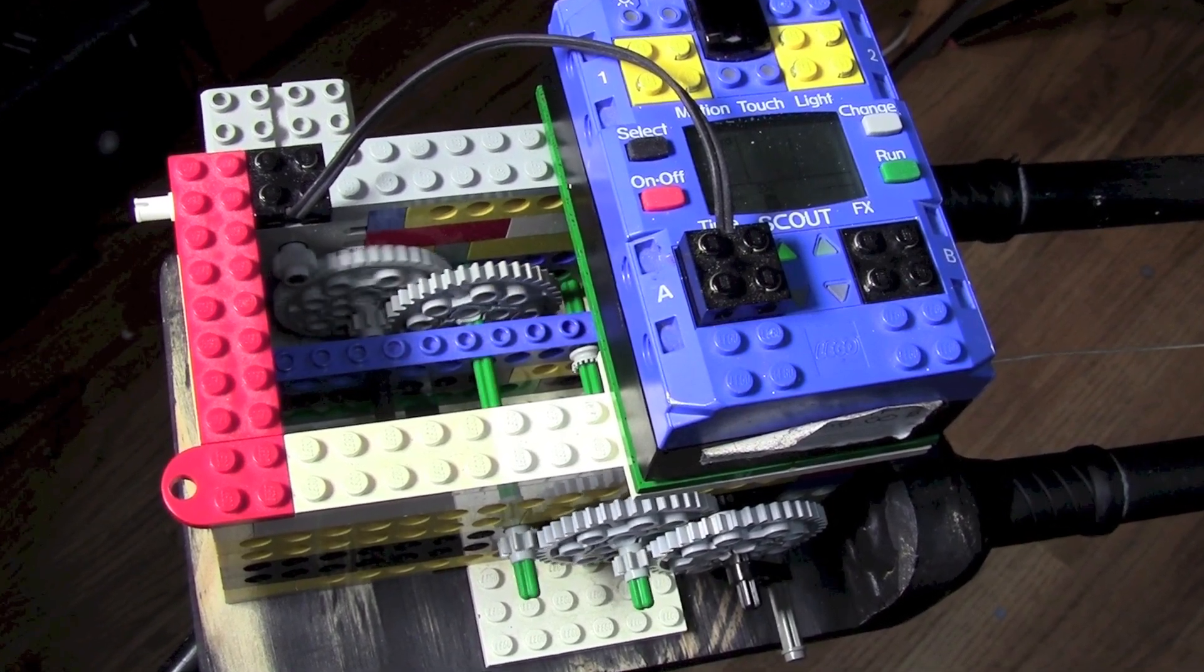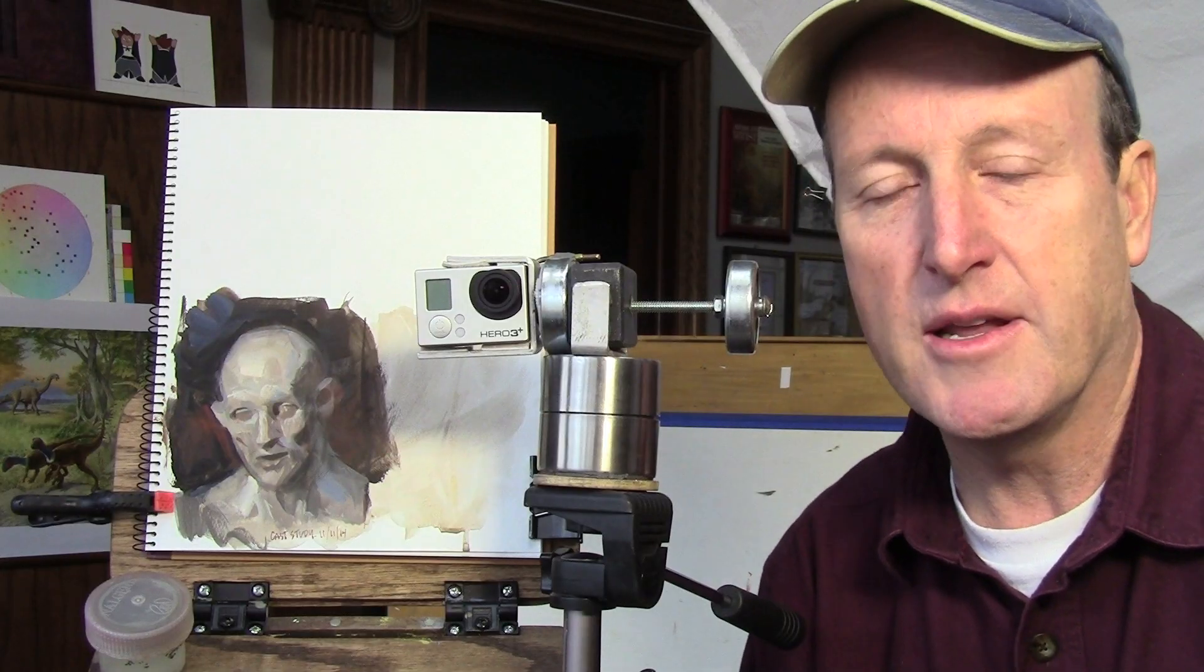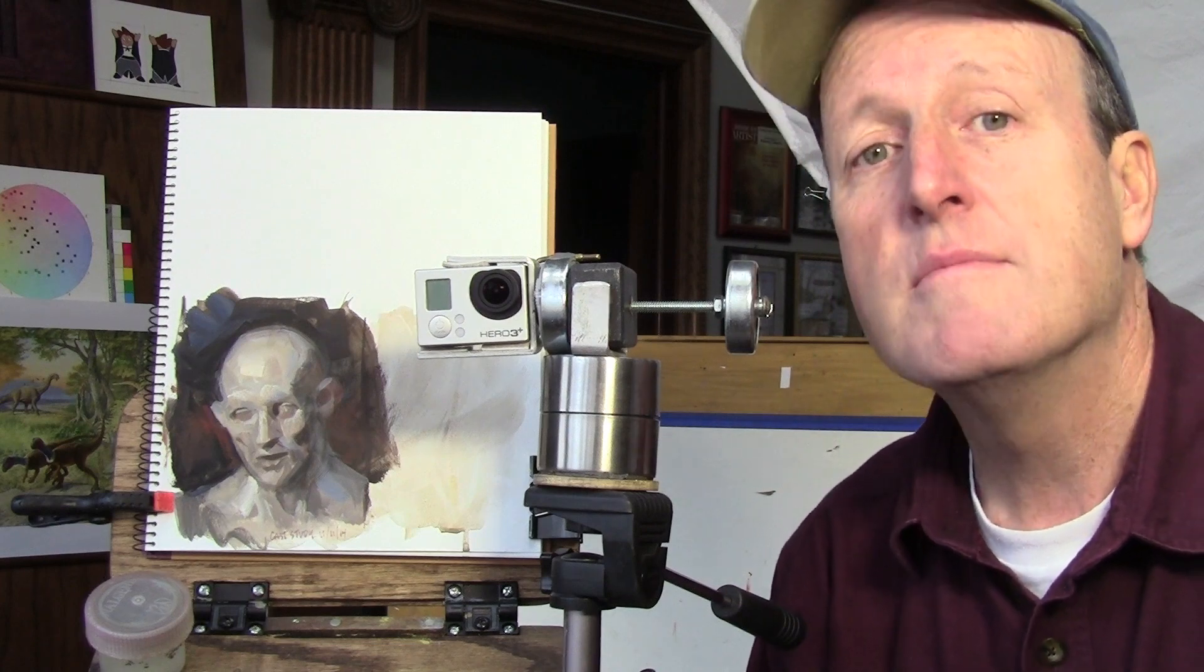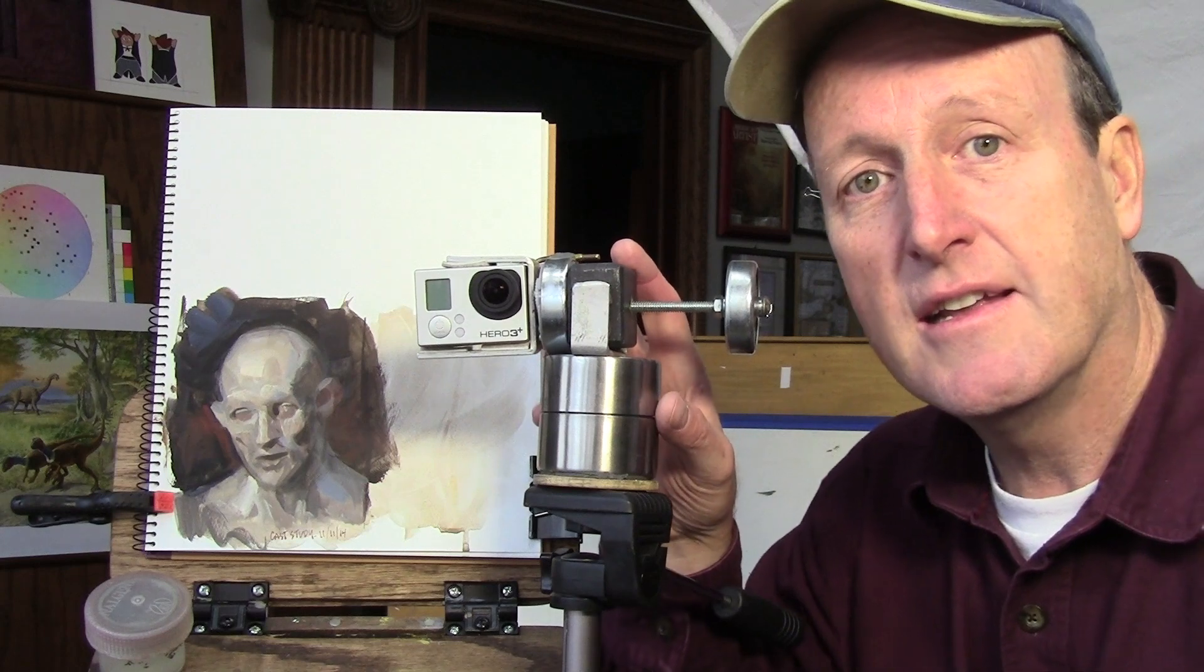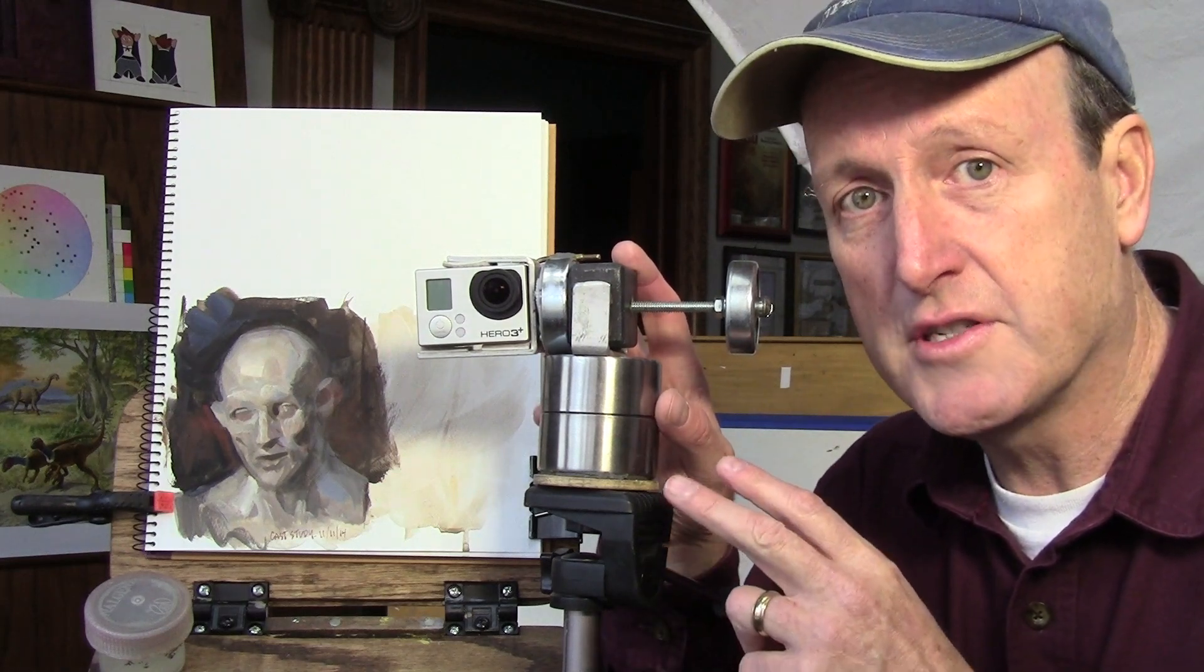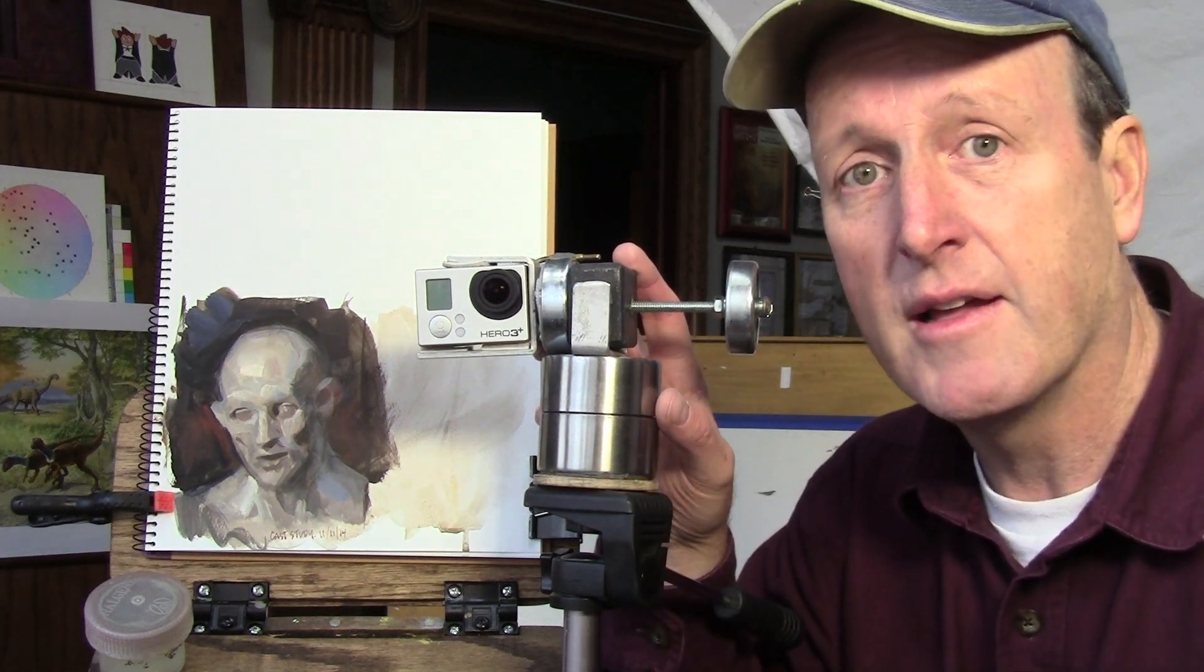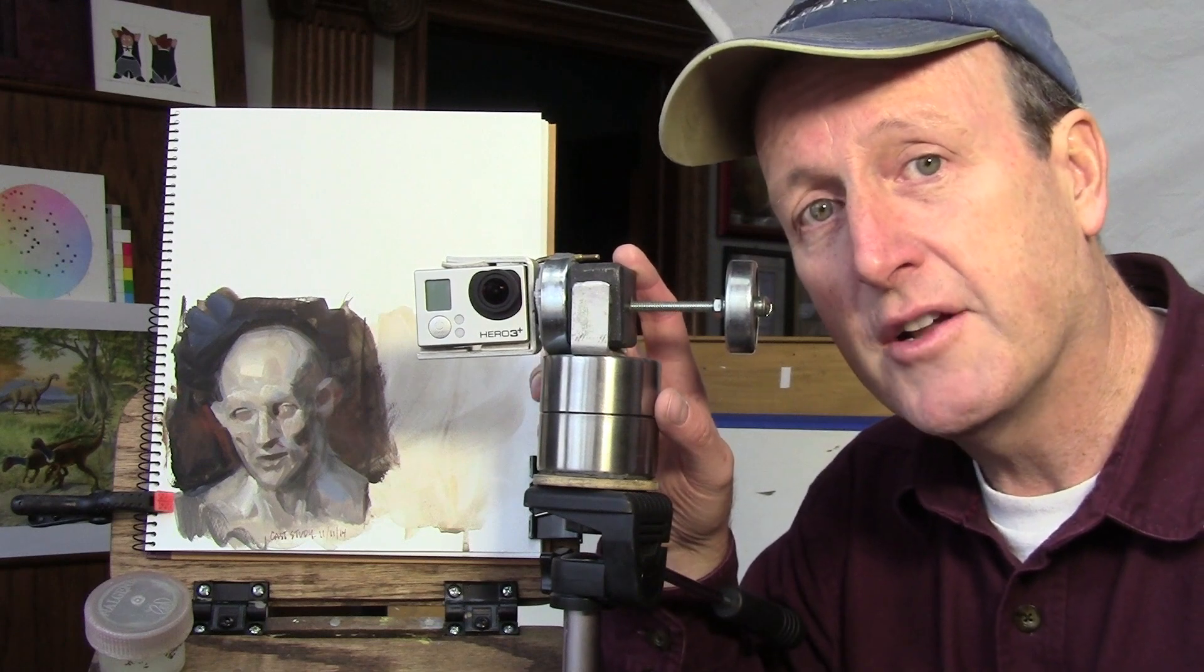In a future video I'll show you how to make the Lego dolly system and also the motors that are geared down to work for motion control. But for now let's focus in on this two axis egg timer motion control system for turning the GoPro camera. So let's go down in the workshop and I'll show you how it's made.